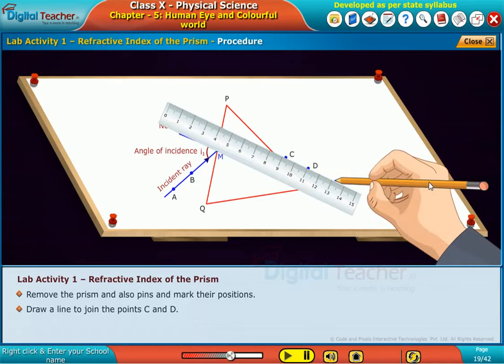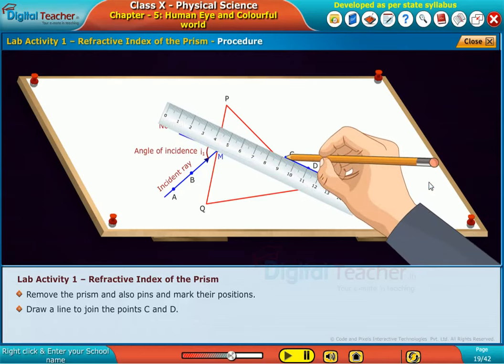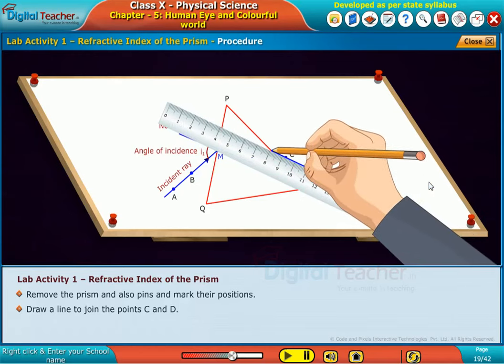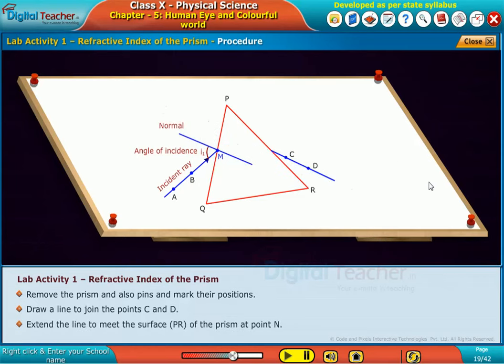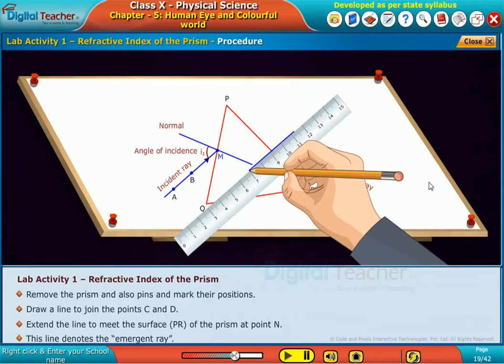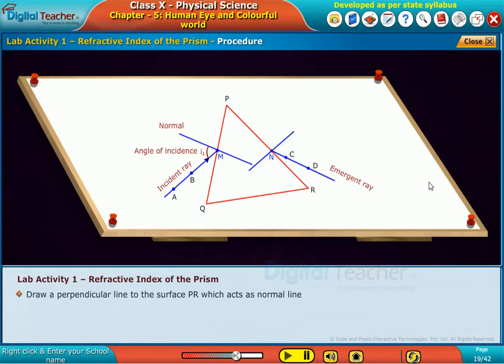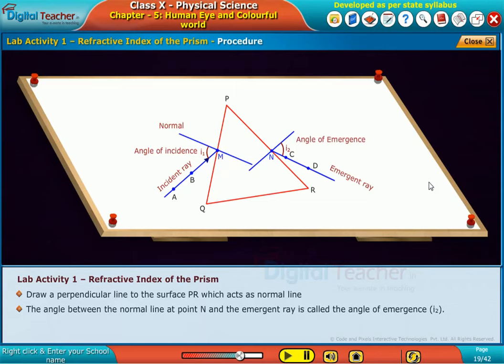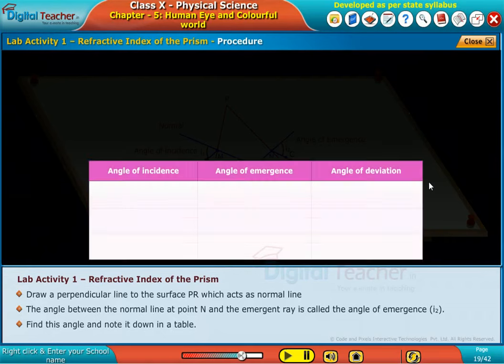Draw a line to join the point C and D. Extend the line to meet the surface P R of the prism at point N. This line denotes the emergent ray. Draw a perpendicular line to the surface P R, which acts as normal line. The angle between the normal line at point N and the emergent ray is called the angle of emergence, I two. Find this angle and note it down in a table.